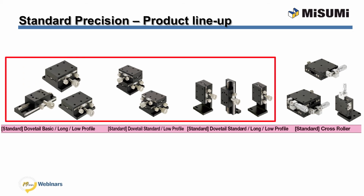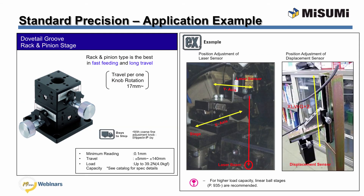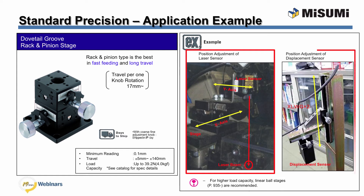Also available is the XY stage with the cross roller guide utilizing a feed screw feeding method. In this standard positioning stage example, we are utilizing an XY stage to adjust a laser sensor. A rack and pinion type is the best option for fast feeding and long travel — travel per one knob rotation is 17 mm linear. In a second example, the stage is used to adjust a displacement sensor. Be sure to clamp the z-axis in position to hold the load in place.